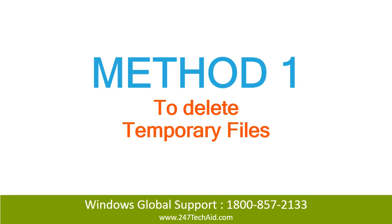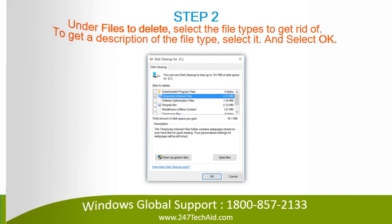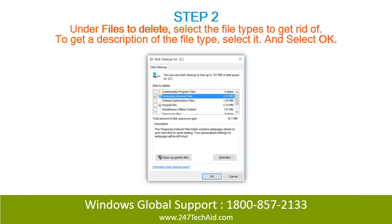Method 1: To delete temporary files. Step 1: Search for Disk Cleanup from the taskbar and select it from the list of results. Step 2: Under 'Files to delete,' select the file types you want to get rid of. To get a description of a file type, select it and then select OK.